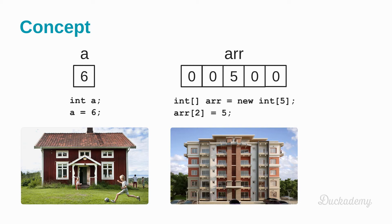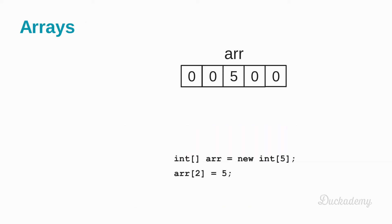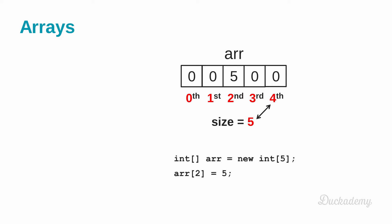Why middle? In arrays, the numbering starts from 0, not from 1. And the last one is the 4th. So if the size is 5, then the last index is 4. So the size and last index are not the same — it's important.